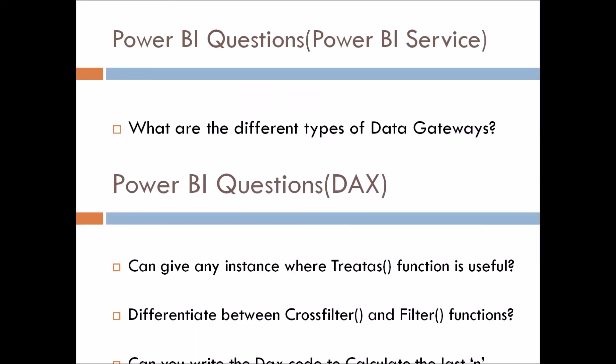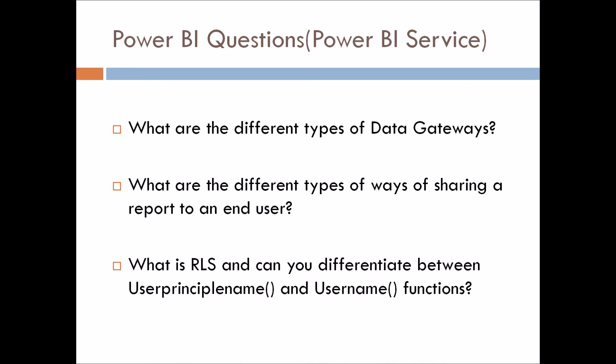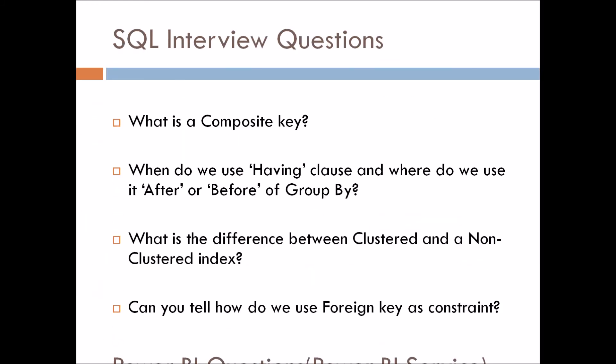Moving to the Power BI Service section. The first question is: what are the different types of data gateways? Second: what are the different ways of sharing a report with end users — you have to mention the different ways of sharing once you publish a report to the service. The last question is: what is role-level security (RLS), and can you differentiate between the USERPRINCIPALNAME and USERNAME DAX functions?